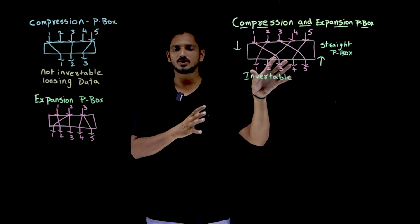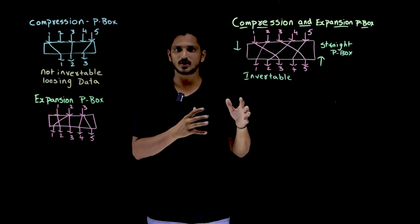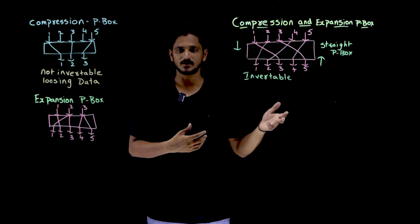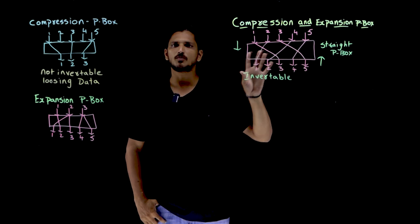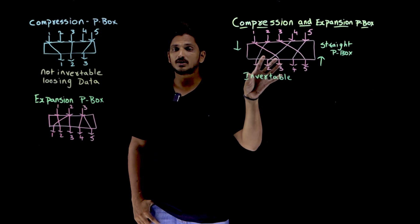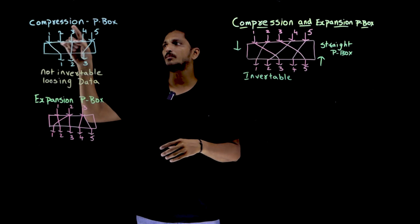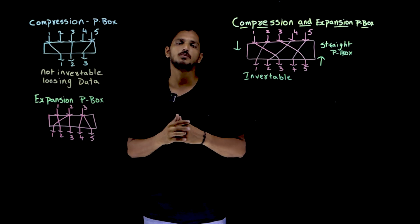So this is mostly used in our cryptography algorithms. The real life cryptography algorithms are going to use all these components. So not only this Stripe P-Box, we are going to use compression P-Box and expansion P-Box also.